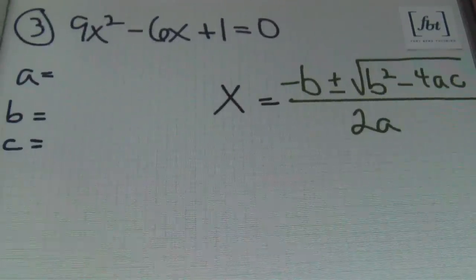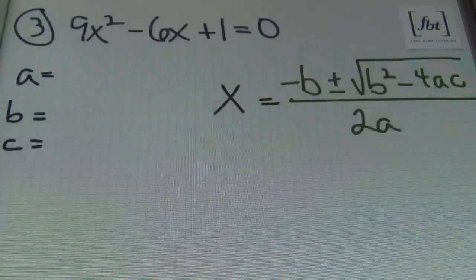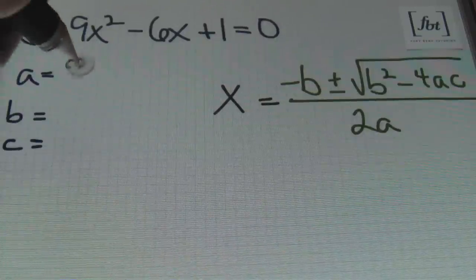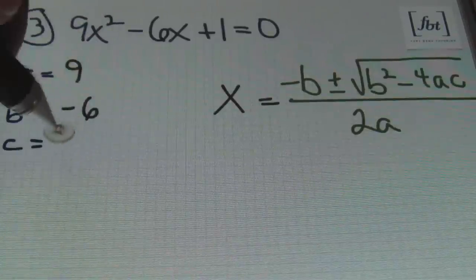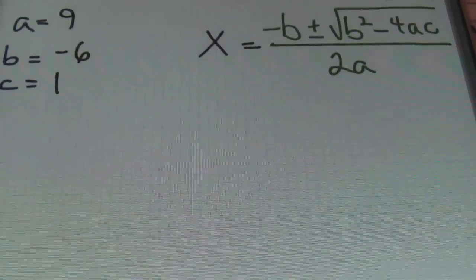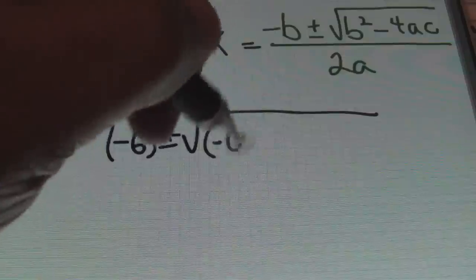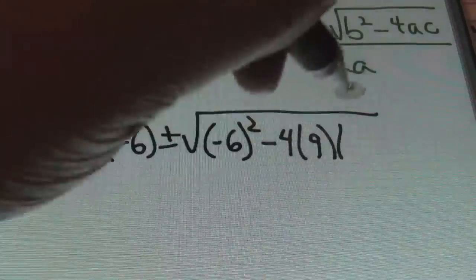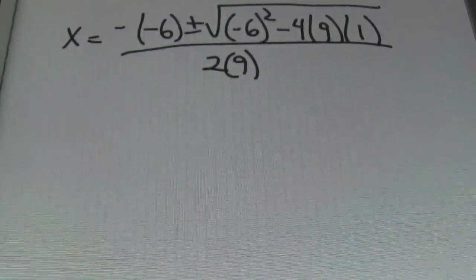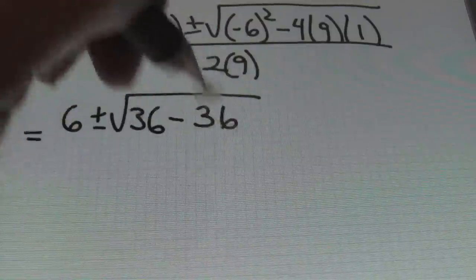Problem number three: 9x squared minus 6x plus 1 equals zero. It's already set equal to zero, so we don't need to manipulate the equation. Writing down coefficients: a equals 9, b equals negative 6, c equals positive 1. Plugging into the quadratic formula: x equals negative negative 6 plus or minus the square root of negative 6 squared minus 4 times 9 times 1, all over 2 times 9.